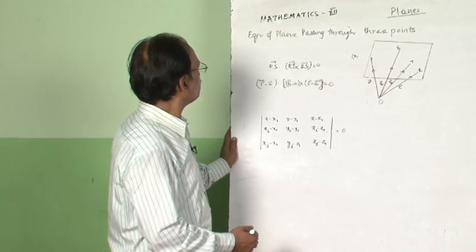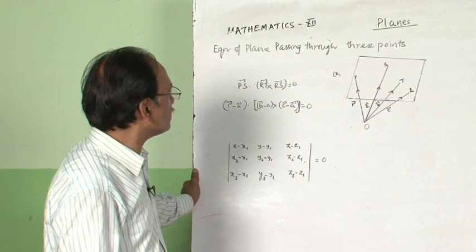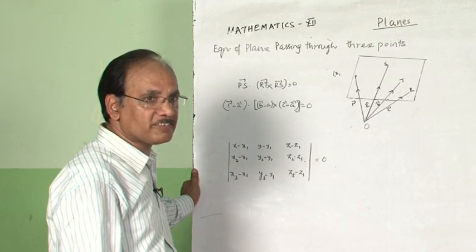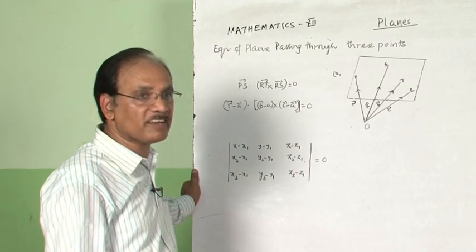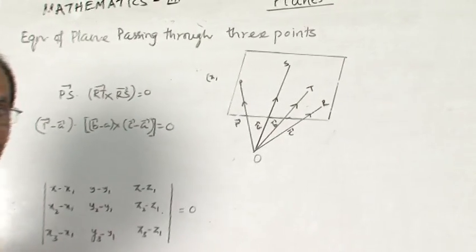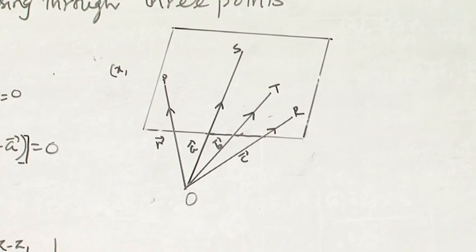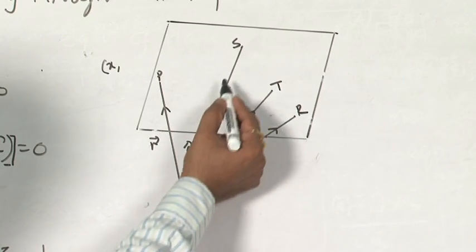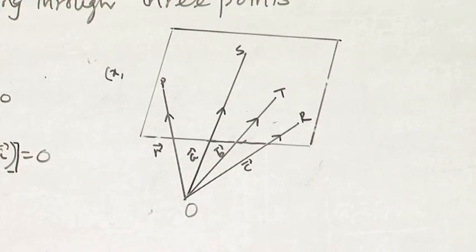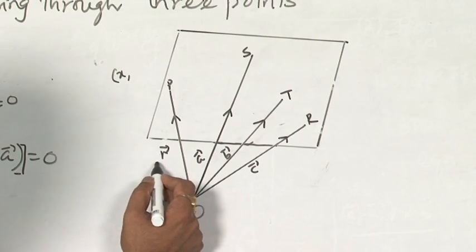My dear students, now we have to find the equation of a plane passing through 3 points, and we will find this using the relations from scalar triple product. When 3 vectors are coplanar — lying on the same plane — their scalar triple product is equal to 0. In this case O is the origin and the position vectors of points S, T, R are given as vector A, vector B, and vector C. We take a general point P with position vector r.